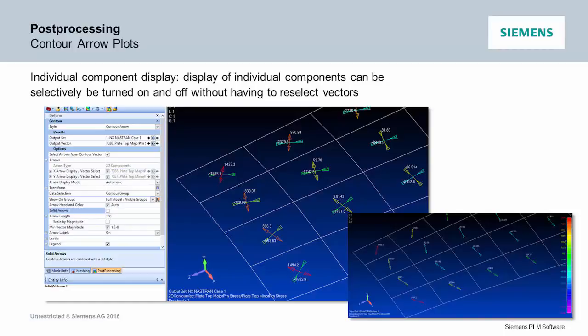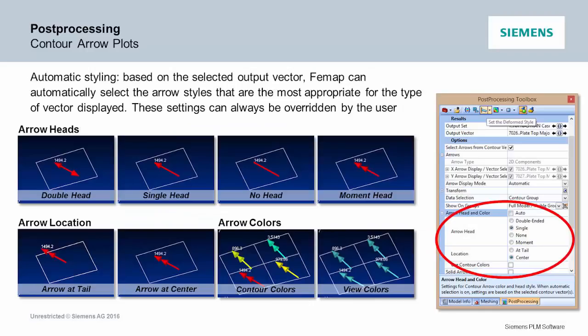It does the same thing if you're plotting principal stresses. It automatically switches to center arrows, shows tension and compression, and you can see what direction they are. It automatically picks the minor stress if you pick major stresses. But if you want to turn one of them off, just turn one off and you'll see just the one at a time. There are also solid arrows if you want to make it look nice — and those actually do look pretty nice.